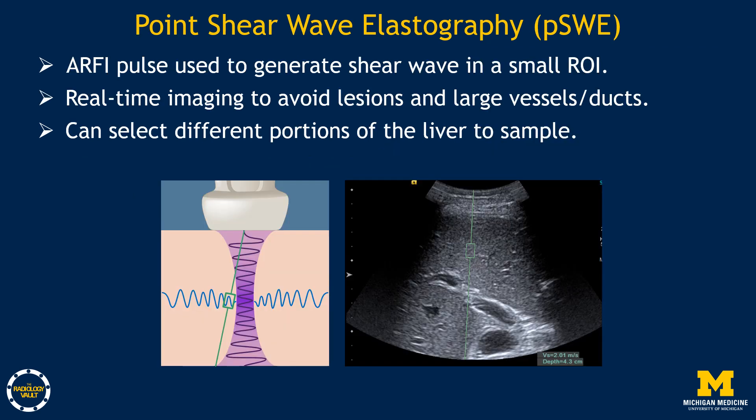In point shear wave elastography, an ARFI pulse is used to generate shear waves in a small region of interest, typically 1 cc in volume. Real-time imaging is used to avoid lesions and large vessels and bile ducts. The sonographer can select different portions of liver to sample.